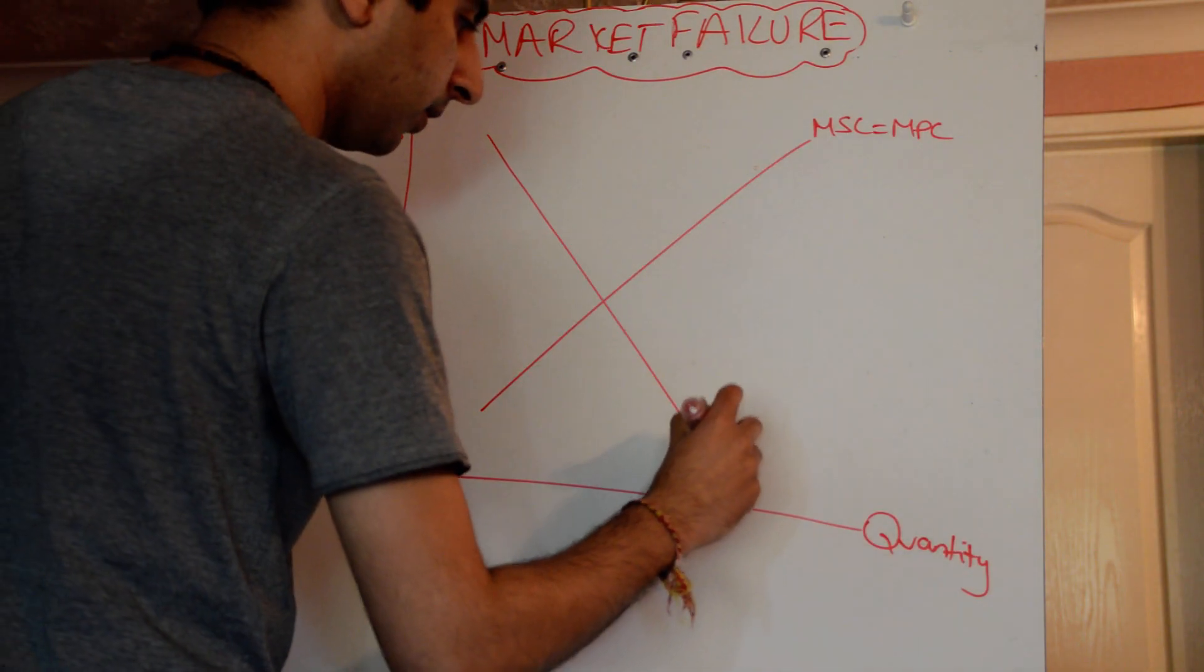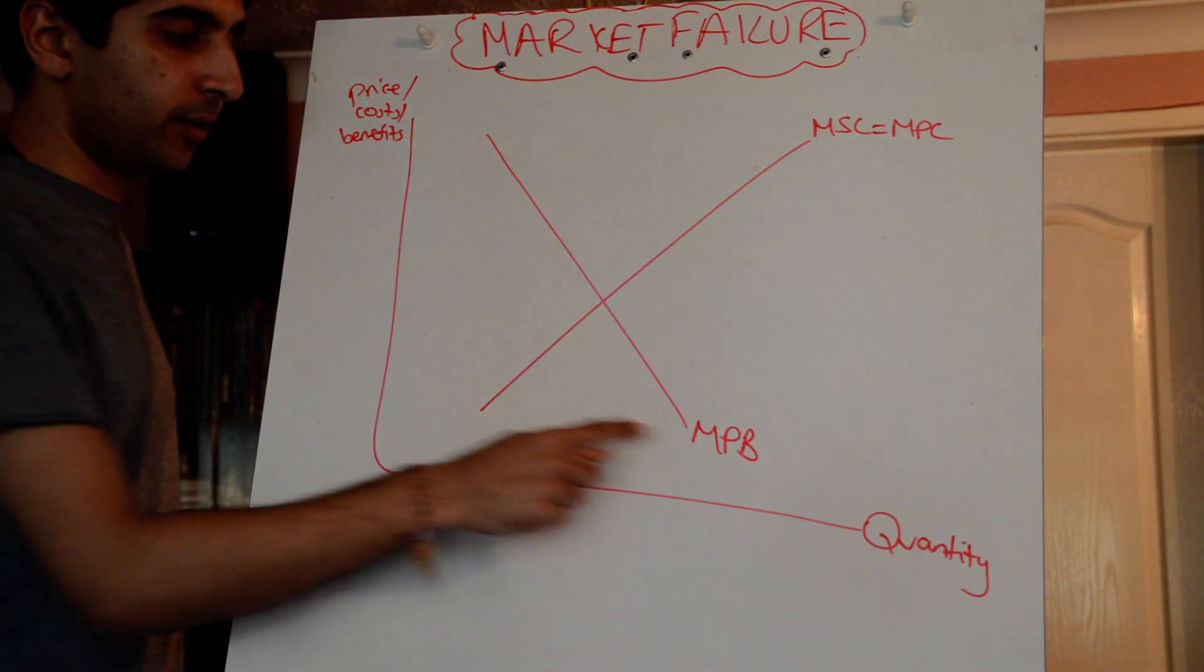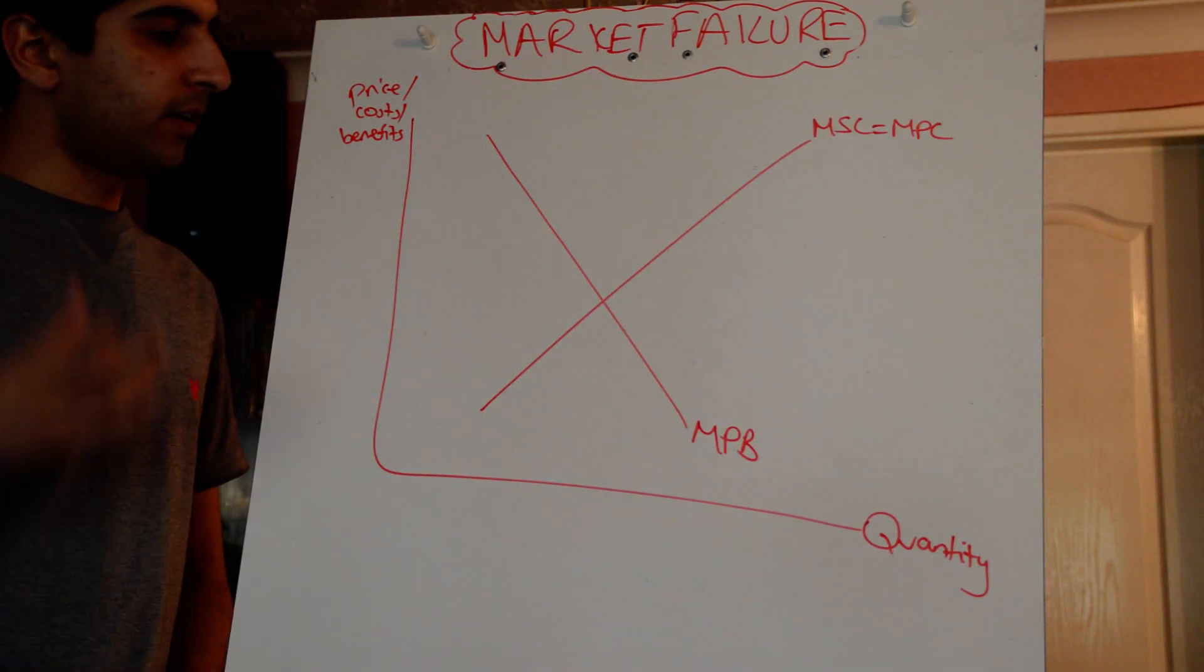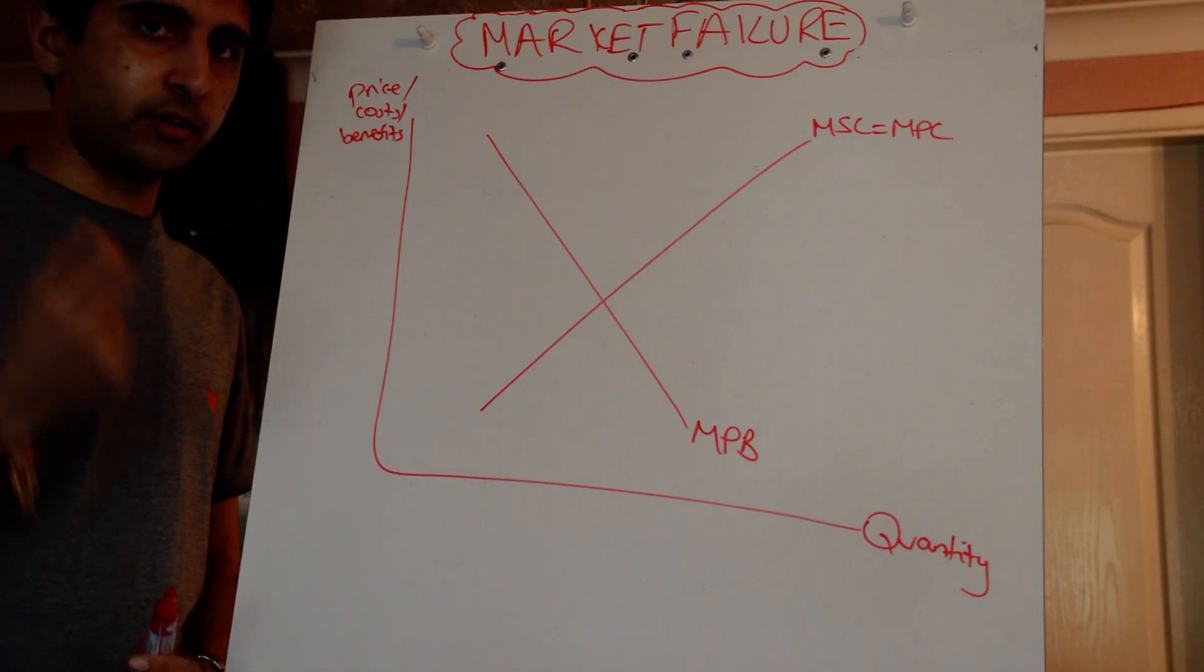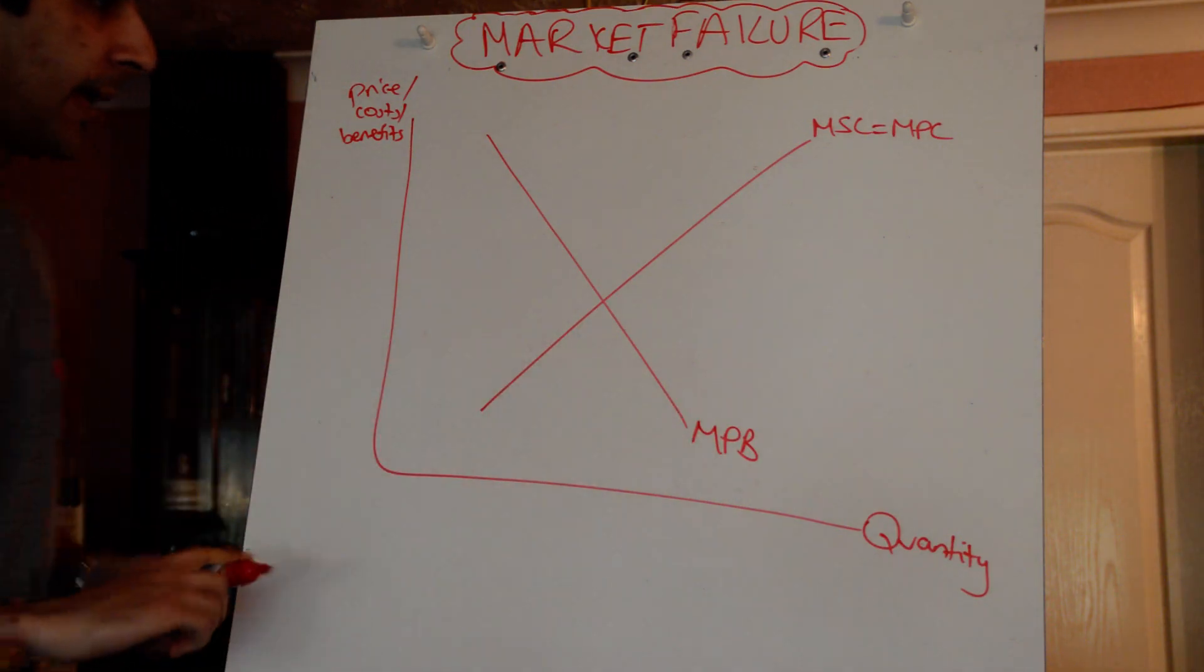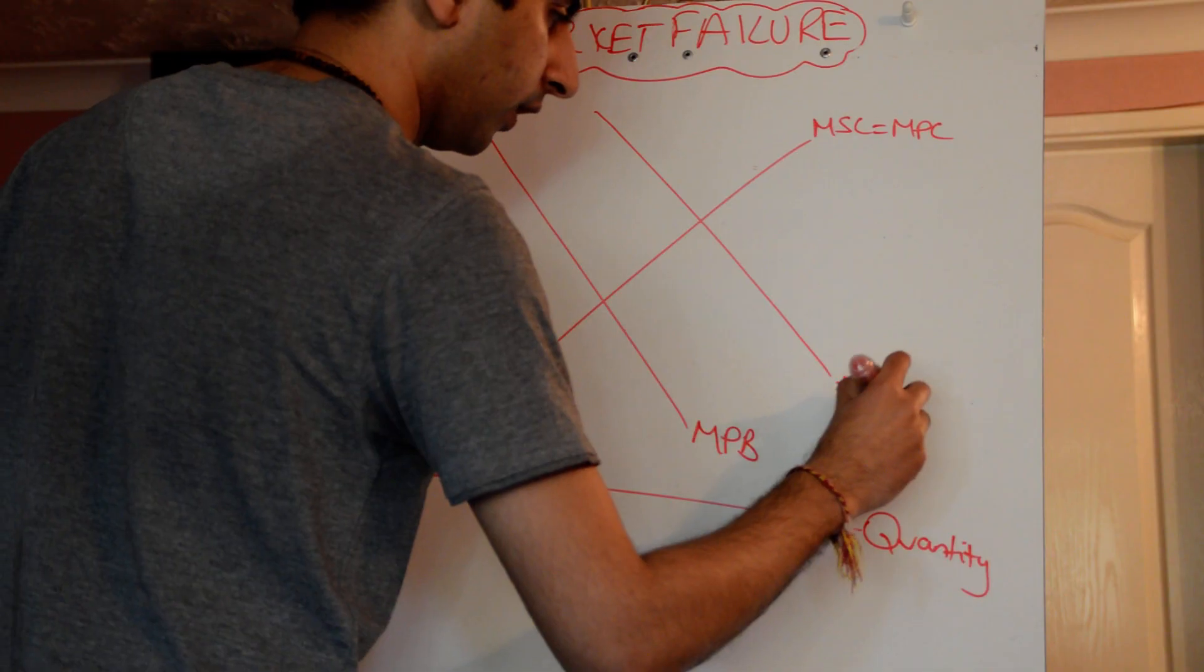Then we have our marginal private benefit curve. But there's going to be a discrepancy between marginal private benefit and marginal social benefit, because the marginal social benefit takes into account external benefits, positive externalities. As a result, MSB is going to be greater than MPB, as shown on the diagram.